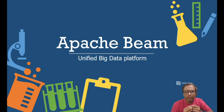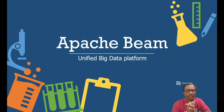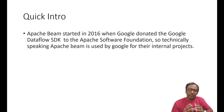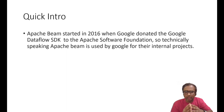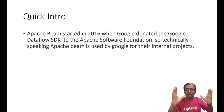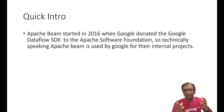Hello everyone. In this video we'll try to understand Apache Beam. Apache Beam is one of the big data tools — there are many big data tools like Apache Spark, Flink, Hadoop, and so many more. Why are we talking about Apache Beam? Apache Beam started in 2016 when Google donated their Dataflow SDK to the Apache Software Foundation. Apache Beam is used by Google for their internal projects — Google serves millions of requests per second, so such a big product using Apache Beam is one good reason why we need to learn it.